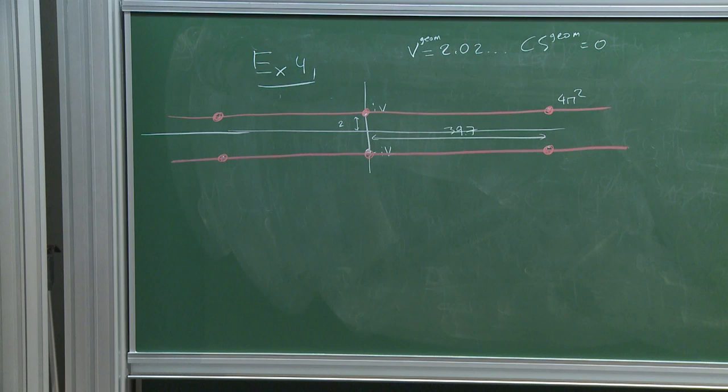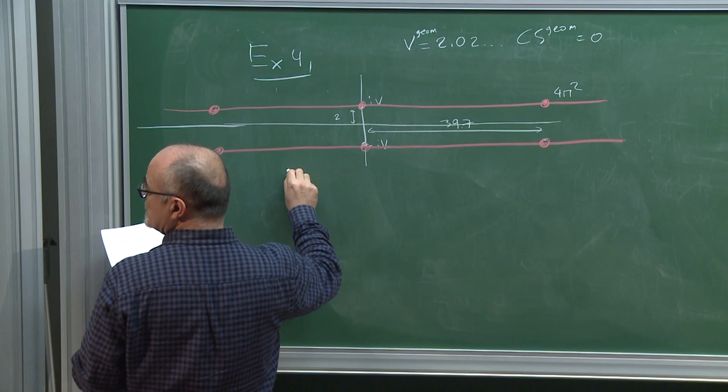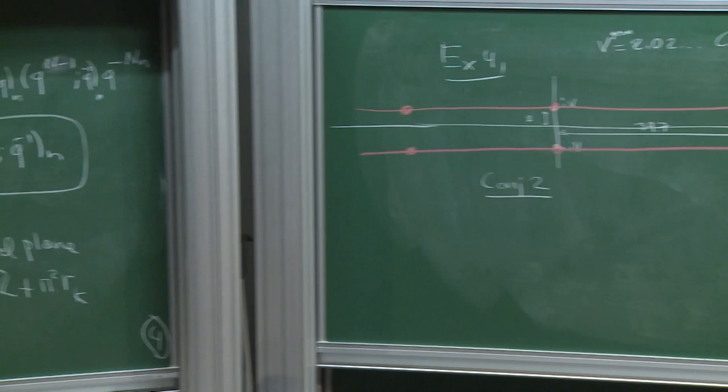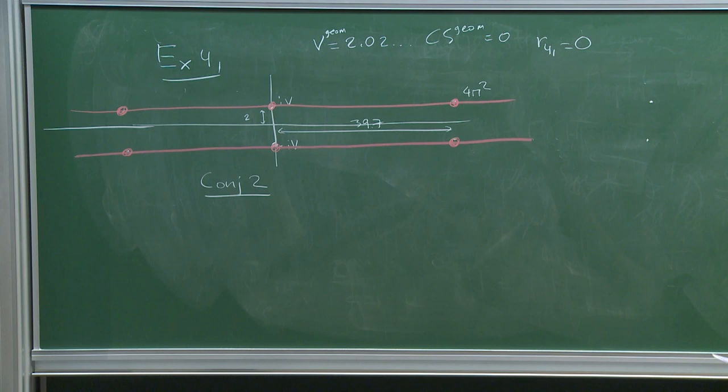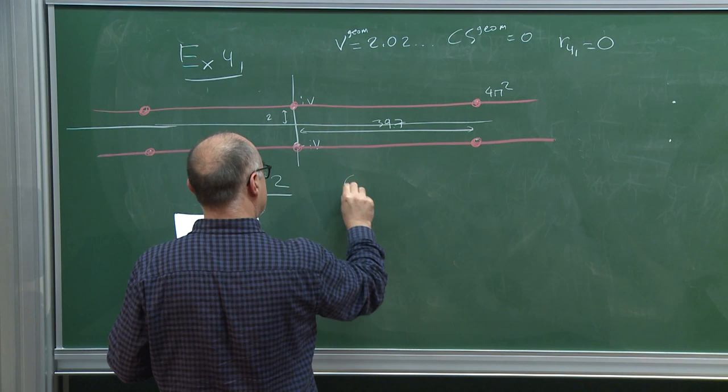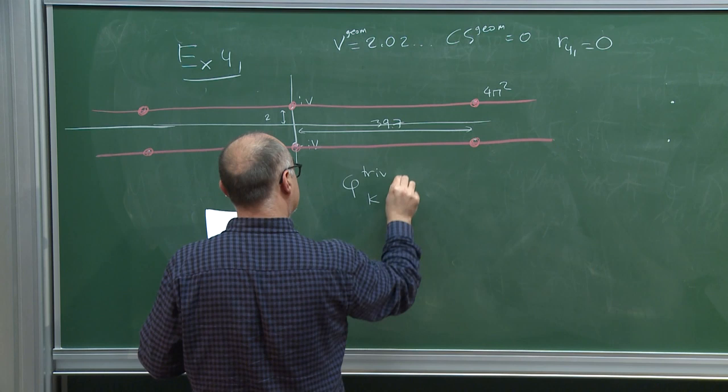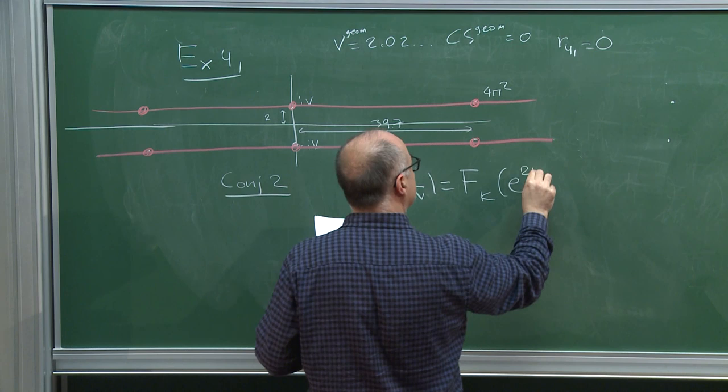Let me give another conjecture. Define φ_trivial of a knot K as the evaluation of the colored Jones polynomial at the Kth root of unity — the Kashaev invariant of the knot. It is a sequence of numbers. The conjecture is that this sequence of numbers is a resurgent function in the Borel plane with all the expected singularities.